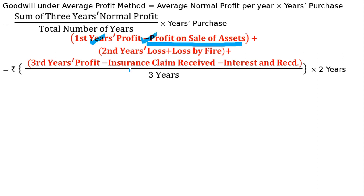The second year shows a loss. And in the second year, there is also a loss by fire of $30,000 included — since loss by fire is an abnormal loss, we add it back.